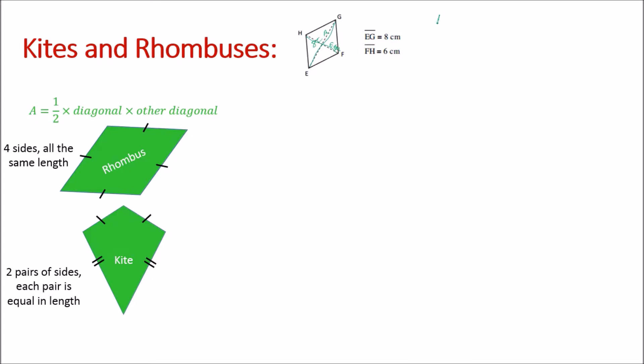Let's write our formula: area equals a half times diagonal one times diagonal two, which is going to be half times eight times six. Now a half of eight is four and four times six is 24, so our final area is 24 centimeters squared.